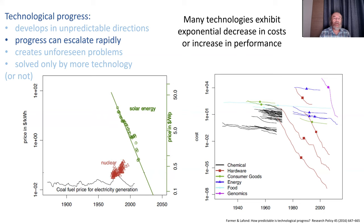Solar energy's cost decline is not a general rule — the cost of nuclear power actually increased over time, partly reflecting politics. If we had invested as much in solar as in nuclear, we might be somewhere else. Different industries follow very different trajectories: hardware costs fall fast, food production costs fall much more slowly, and genomics sequencing falls the fastest of all.